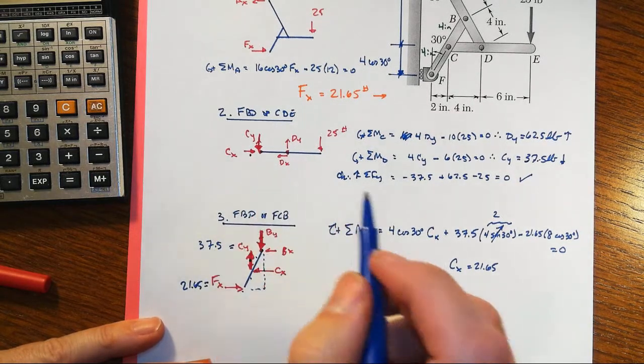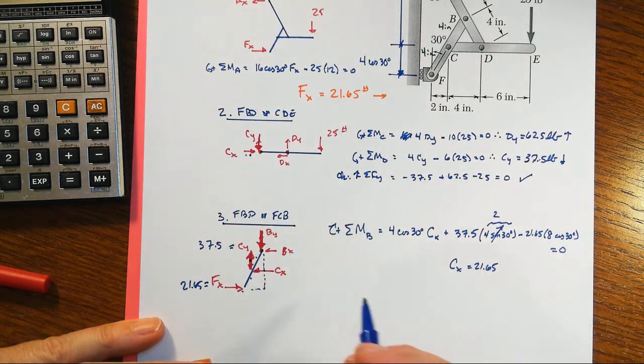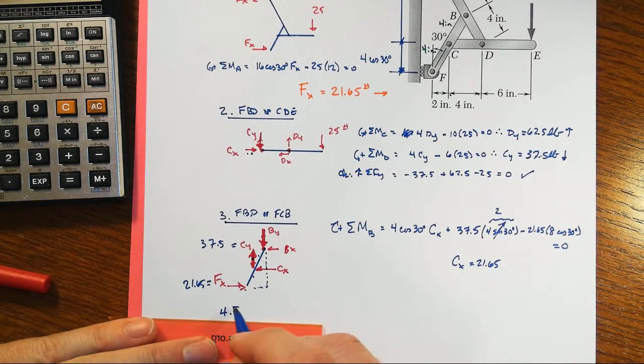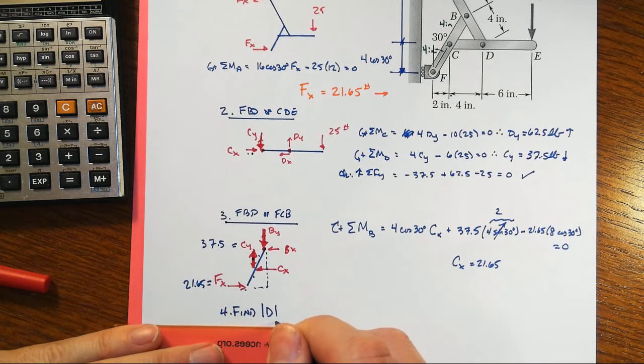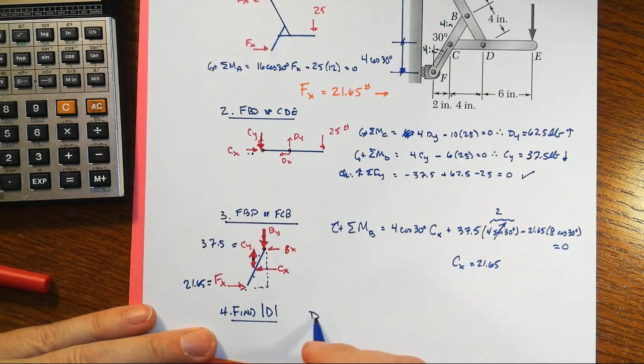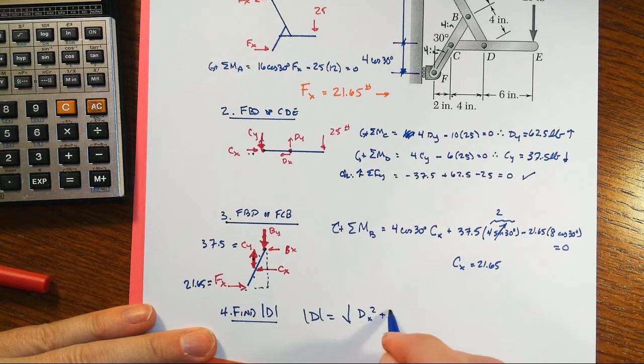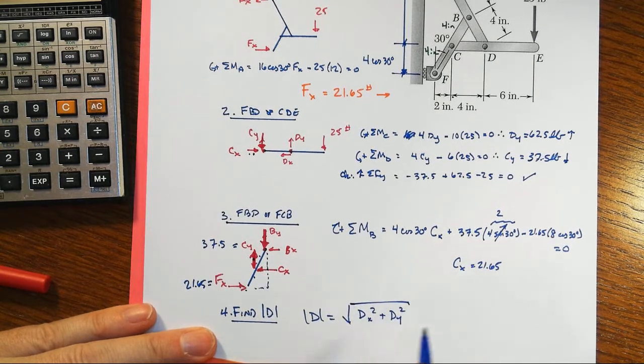Which is the magnitude of D—which is the magnitude of D, only not the direction, but just the magnitude of D—that's the square root of the sum of the squares of the components. And so that would be the square root of 21.65 squared plus...